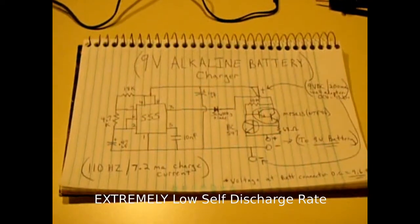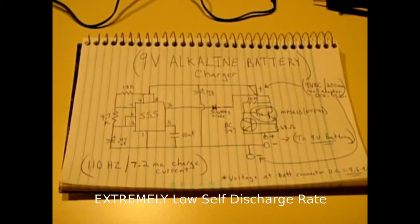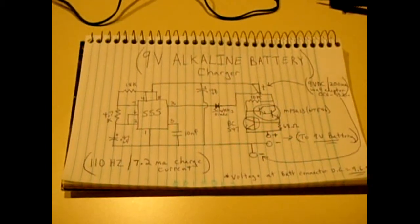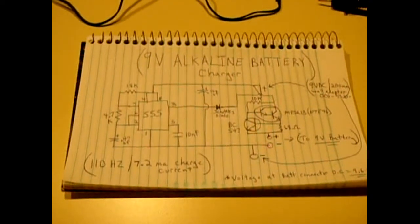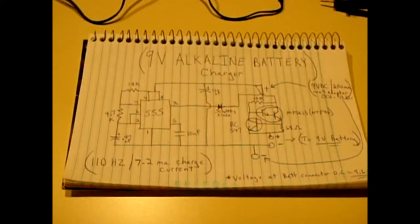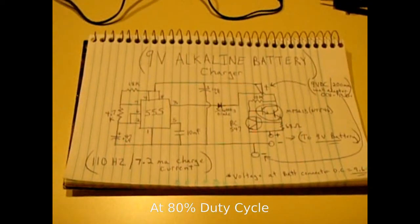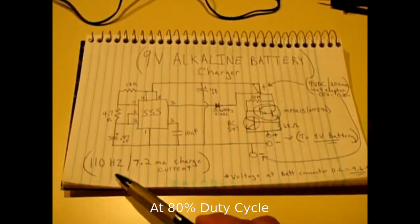The proper way to charge an alkaline battery and the most successful way without causing them to leak is with a pulsed DC current. It likes to be pulse charged between 40 and 200 pulses per second so I decided to use 110 Hertz.